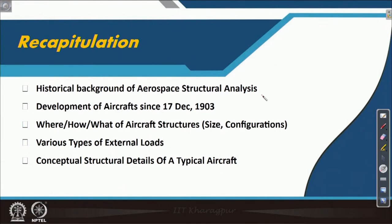We have seen various sizes of aircraft from small to big with respect to size and configuration. From a structures point of view there is not much change, but according to configuration we need to have some change in structural design. We also covered various types of external loads — where they come from and how they come. Loads are the basic thing which we need to withstand, and loads will come into our discussion again and again. Today also we will discuss about loads in more detail.